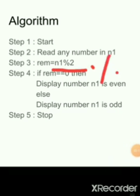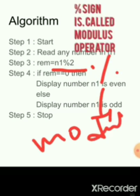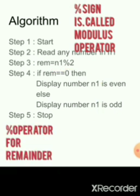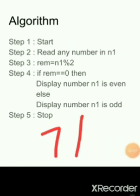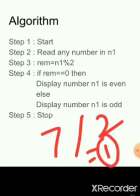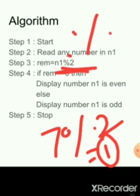In the third step, we use the modulus operator, written as the percentage sign (%). Modulus gives you the remainder. For example, 7 divided by 2 gives remainder 1. So 7 % 2 = 1. This percentage sign is used to get the remainder.